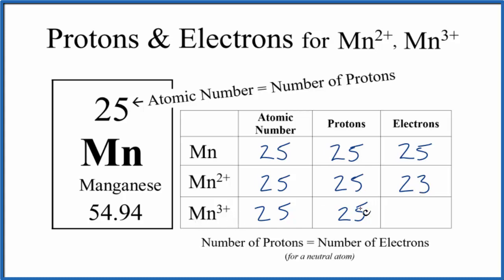For Mn3+, we'll have 22 electrons. So again, the big difference between an atom and its ions is just the number of electrons.